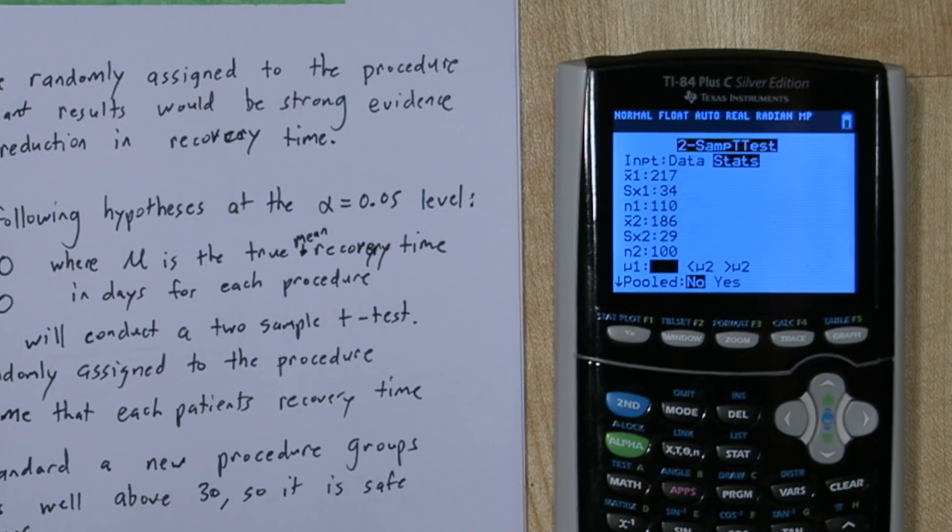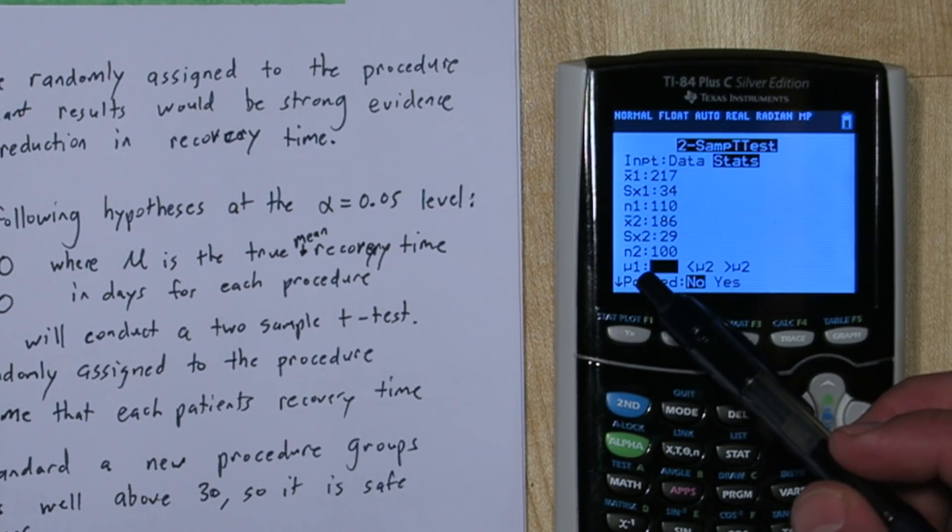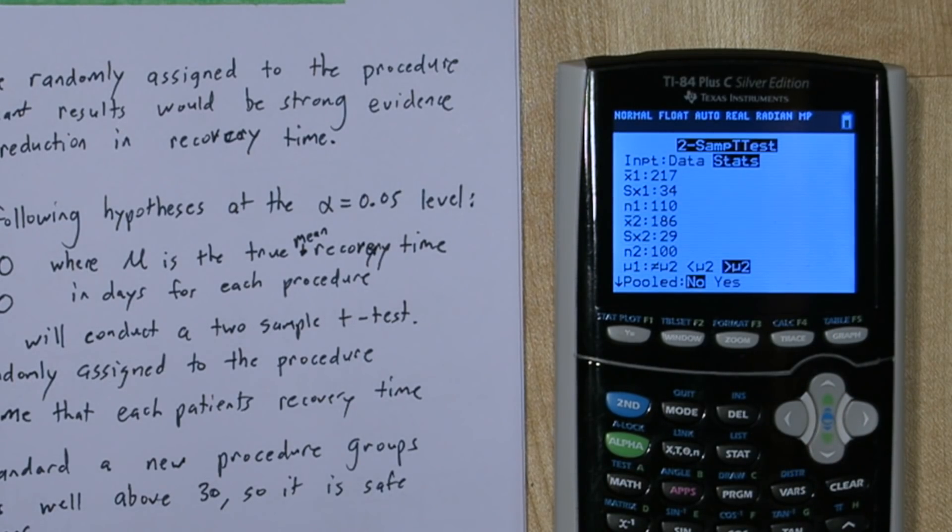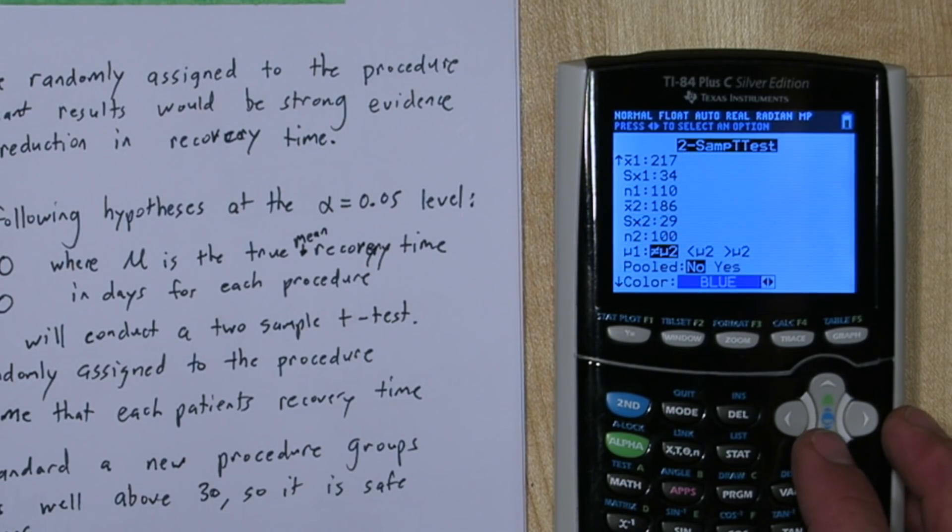Now we're interested in if our mean 1, which is standard, is greater than our mean 2. That would mean a longer recovery time. Now where it says pooled, always say no.